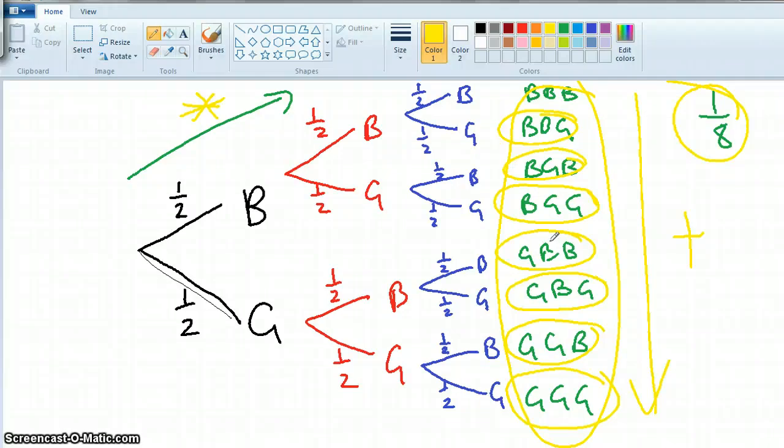So if you've got more than one thing there, so what's the probability of getting exactly one boy? One fraction - that's exactly one boy, that's exactly one boy, that's exactly one boy. Yeah, so it's actually three-eighths.